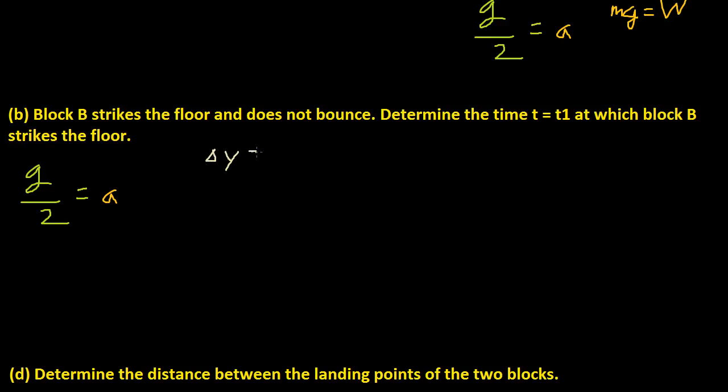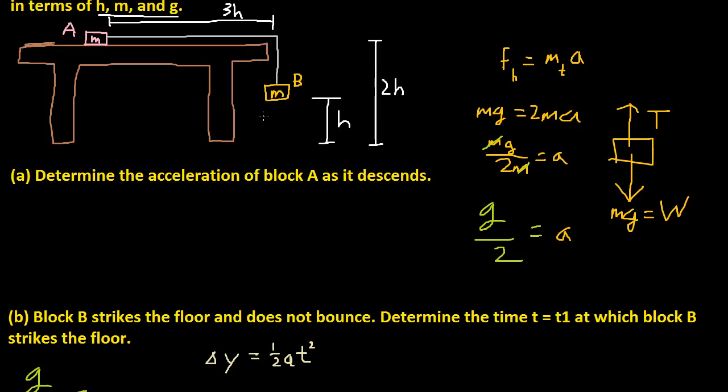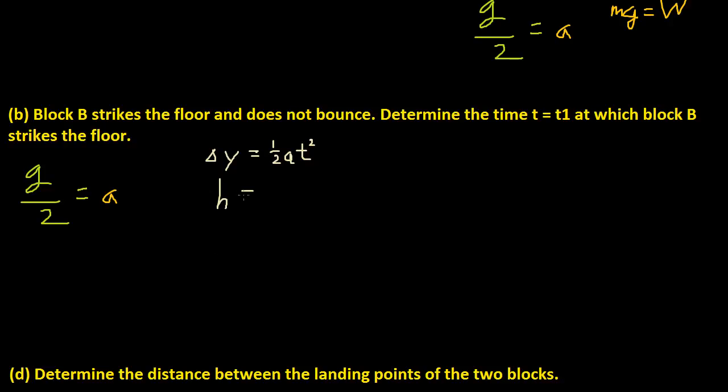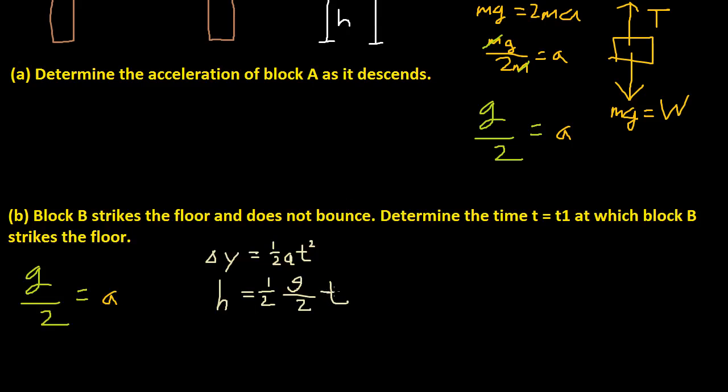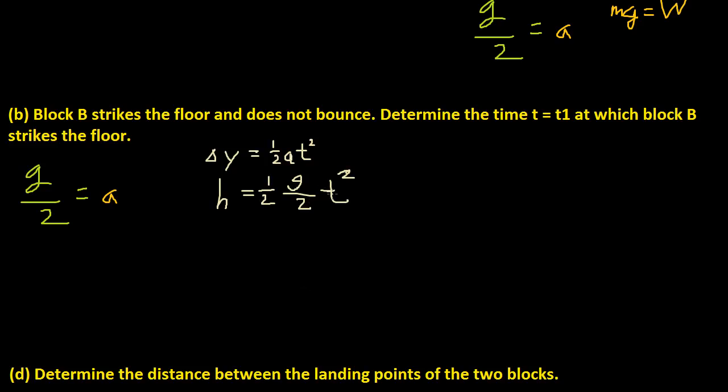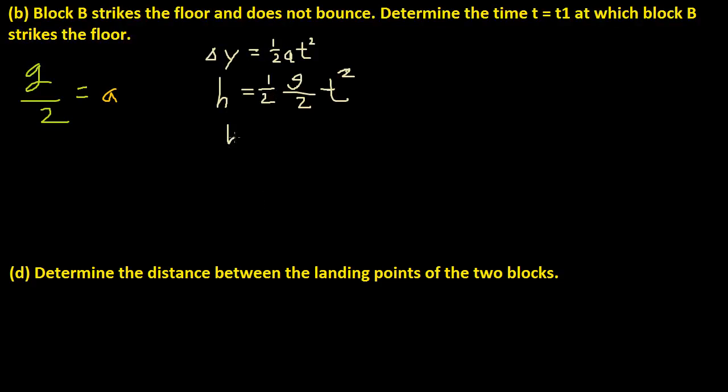Delta y, if you recall from the earlier chapters, is equal to 1 half a t squared plus v naught t. But v naught is 0, so we're just gonna ignore that part. What is delta y in this context? It's h because it's only moving down to the ground. So h equals 1 half times acceleration g over 2 times t squared. If you simplify this, this is gonna be h equals g over 4 t squared.